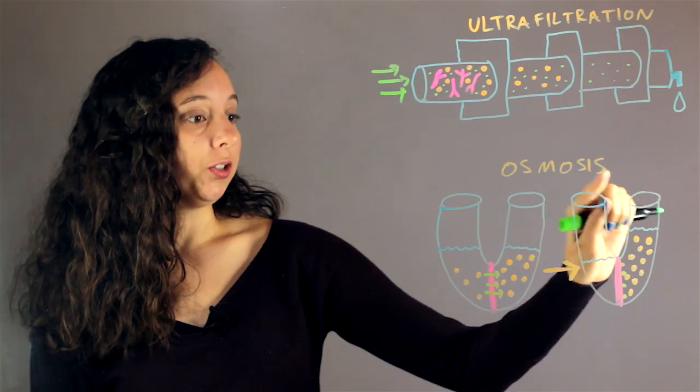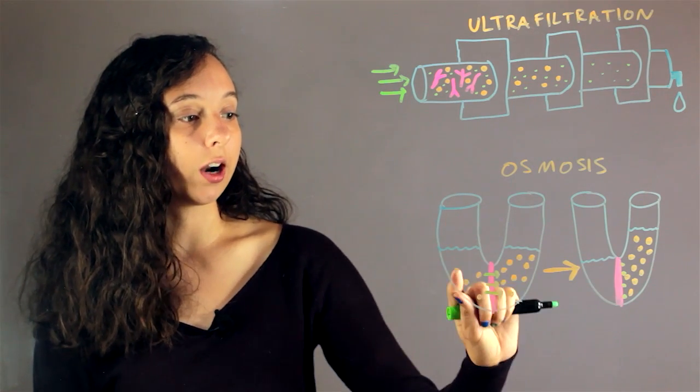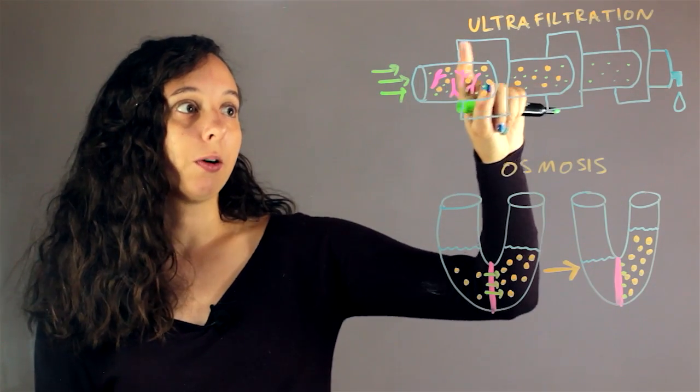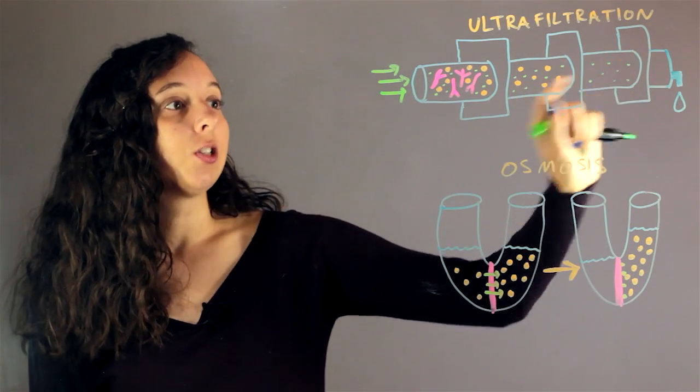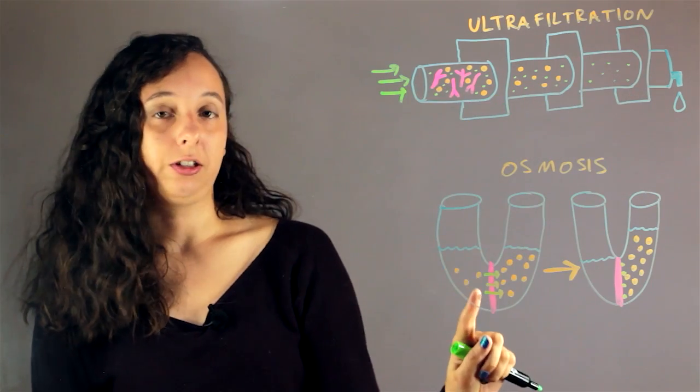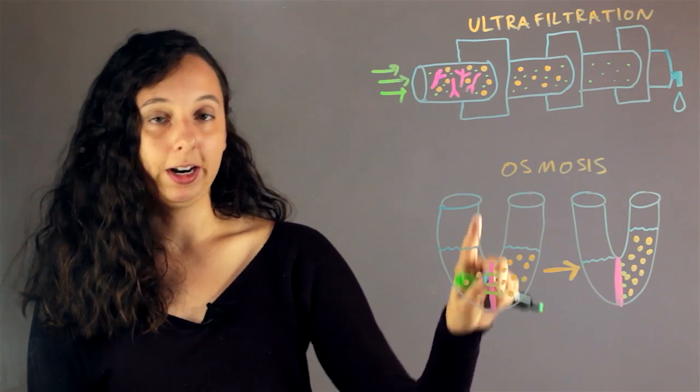So, both of them have the effect of having something large going to one side, but in this case, it's for a very specific purpose, and we're doing it so we can get pure water, and we're applying energy. In this case, it's a natural phenomenon that pressure differences can be created if you have a membrane like this.